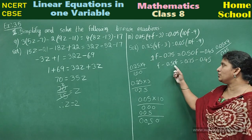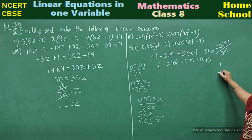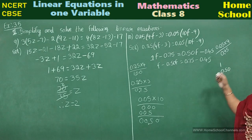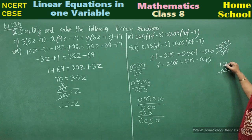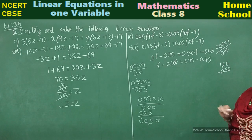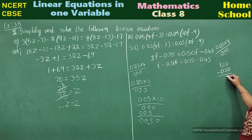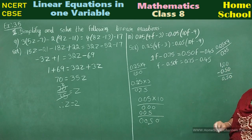1 minus 0.50, what it will be? 1 after this side, you don't have any number, so you can put it as 1.00. Now subtract this: 0 minus 0 is 0. In 0, means borrow 10 minus 5 will be 5, and here nothing will be left. 0.50.